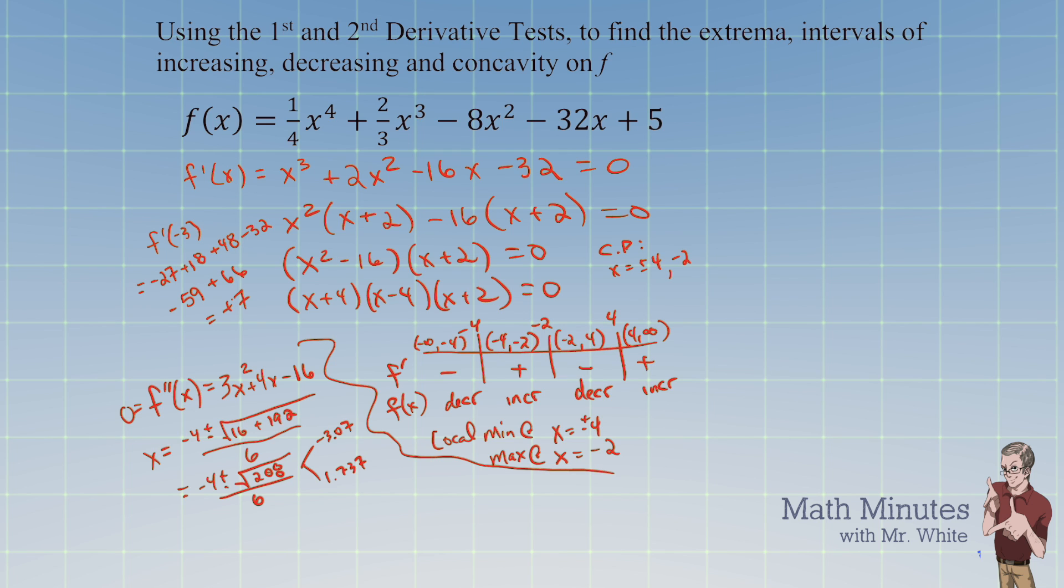At this point, we will set up our second derivative sign chart. Our second derivative sign chart would look like this, at negative 3.07 and 1.737. We will look at the second derivative this time on these intervals. You would write your intervals in here: negative infinity all the way up to here, then between these two numbers, and then all the way to infinity and beyond. Let's do our sign test.